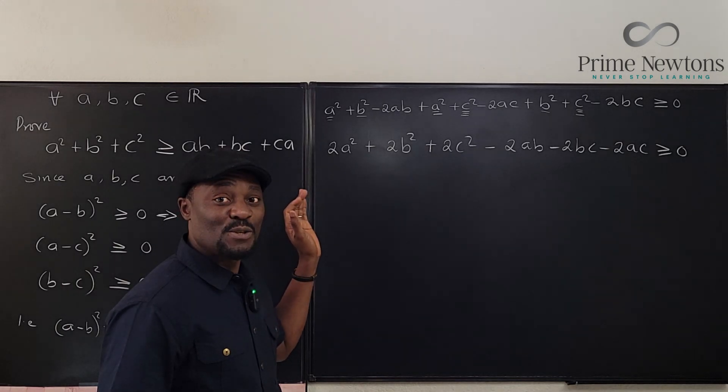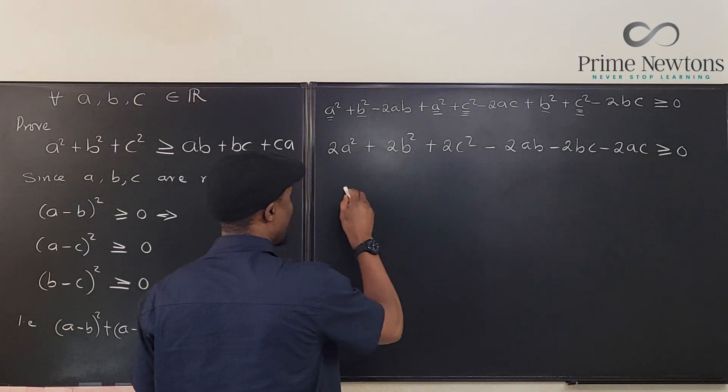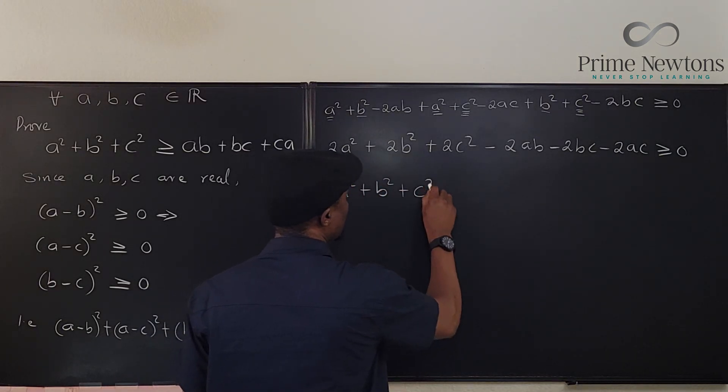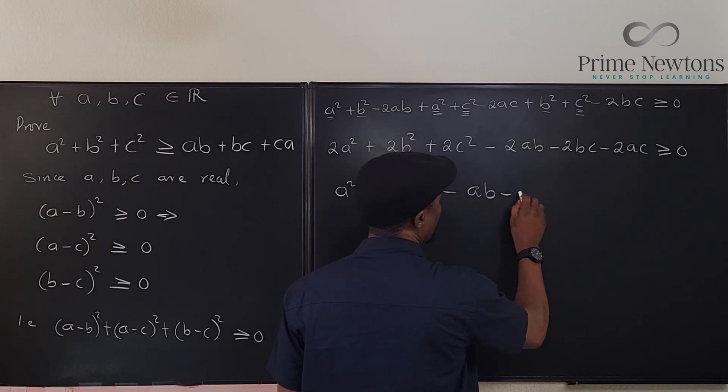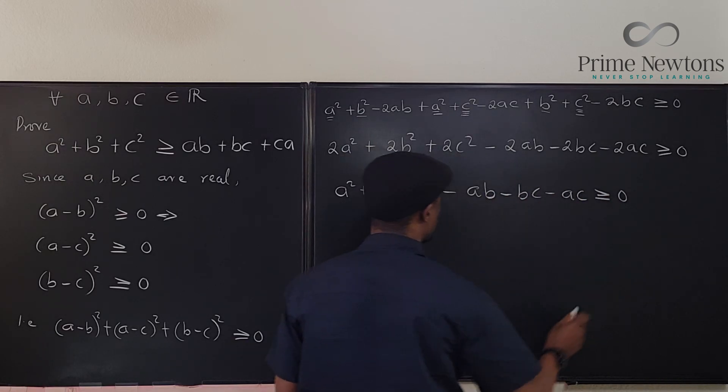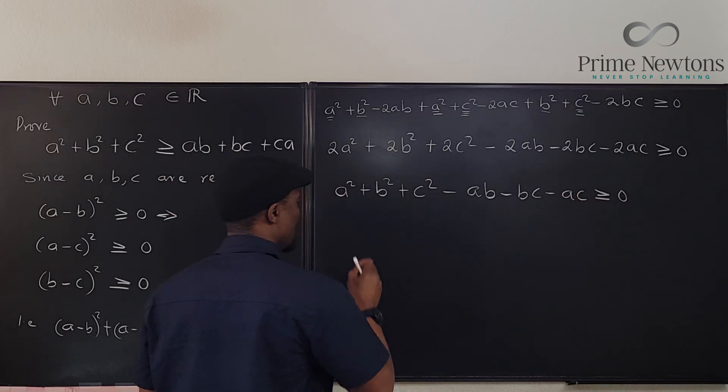And all I have is going to be minus 2AB minus 2BC minus 2AC. Everybody has a 2, so I can divide everything by 2 since it's a scalar. And I have A squared plus B squared plus C squared minus AB minus BC minus AC is greater than or equal to zero. So if I move this over here, I get this and we're done.